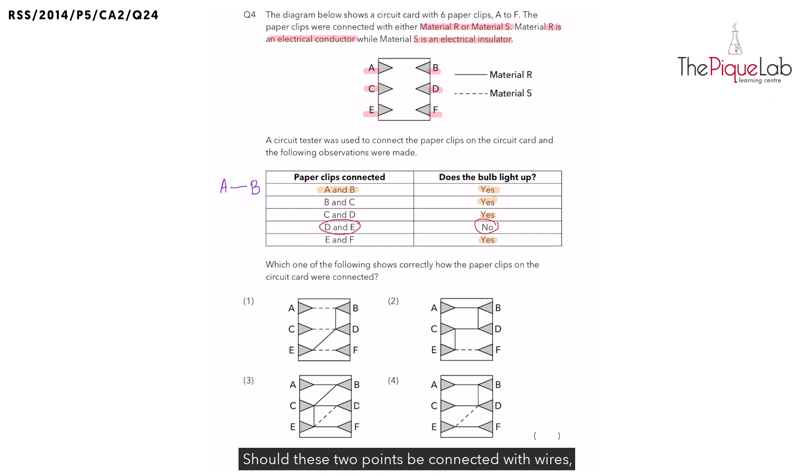Should these two points be connected with wires which are conductors of electricity? No. So let's scan the four options. Look at this solid line that is connecting points D and E directly or indirectly.